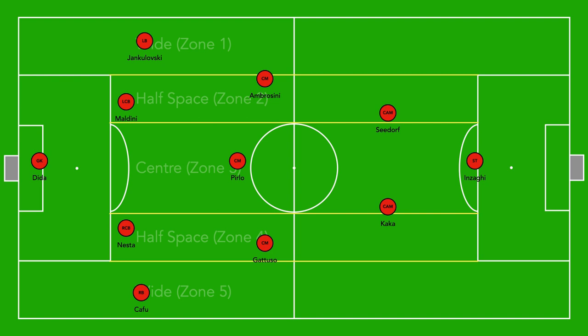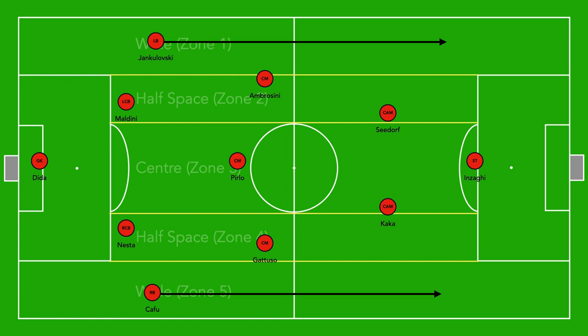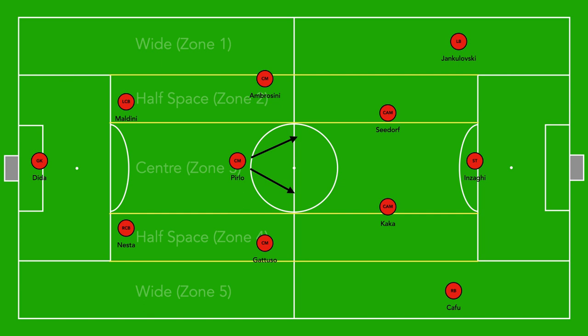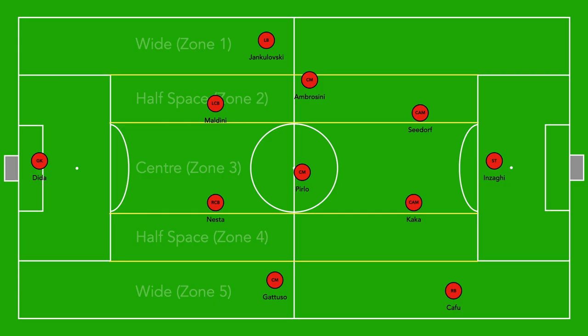When you see the 4-3-2-1 formation laid out on paper, you instantly notice a severe lack of width within the team, simply because there are no wide players. So maintaining and creating width was heavily reliant on the full-backs. In this AC Milan team, we saw both full-backs advancing a lot and essentially joining the attacking unit. And as the full-backs progressed forward, this created the first opportunity to see the excellent passing range of the deep-lying playmaker, Andrea Pirlo.